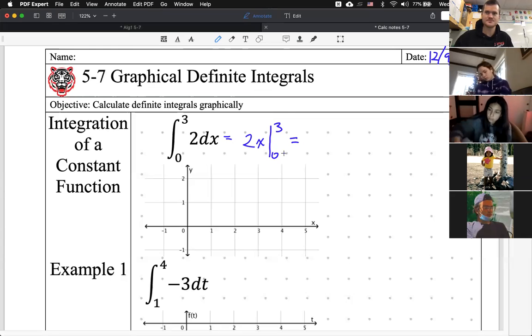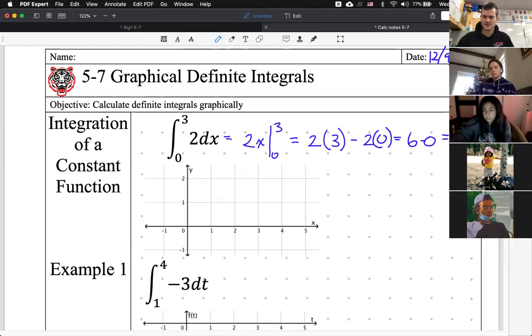And then Chris, what's the next step? So we're first going to plug in the end instead of the start. They always do end minus start. So you're going to plug in 3, 2 times 3. Keep going. Minus 2 times 0. And you can do that, Chris. What is this equal to? 6 minus 0. Which is? 6.